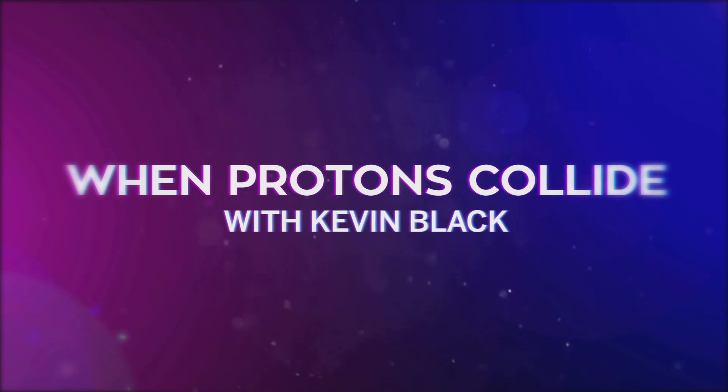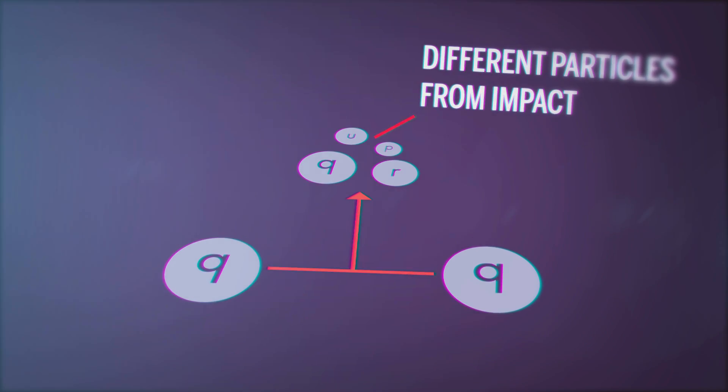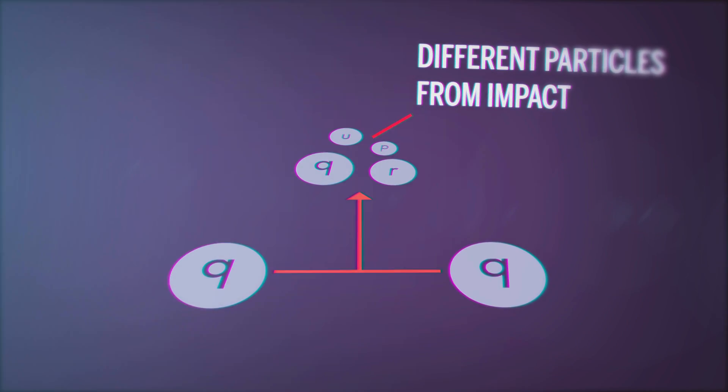As far as we know, when we collide two elementary particles together, one of the possibilities that can happen is that different particles come out of that collision than went in.